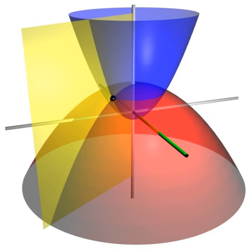In geometry, a coordinate system is a system that uses one or more numbers, or coordinates, to uniquely determine the position of points or other geometric elements on a manifold such as Euclidean space. The order of the coordinates is significant, and they are sometimes identified by their position in an ordered tuple and sometimes by a letter, as in the x coordinate. The coordinates are taken to be real numbers in elementary mathematics, but may be complex numbers or elements of a more abstract system such as a commutative ring. The use of a coordinate system allows problems in geometry to be translated into problems about numbers and vice versa; this is the basis of analytic geometry.